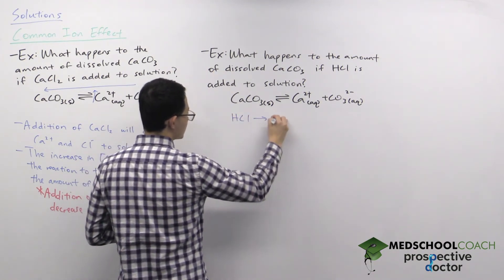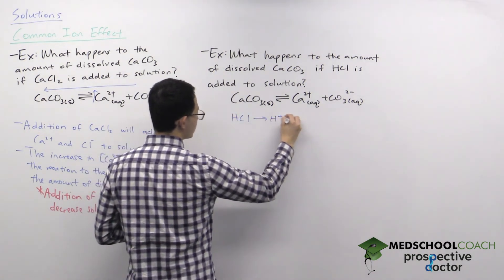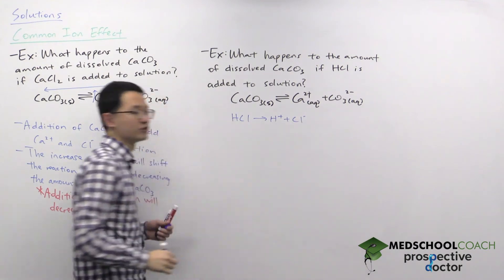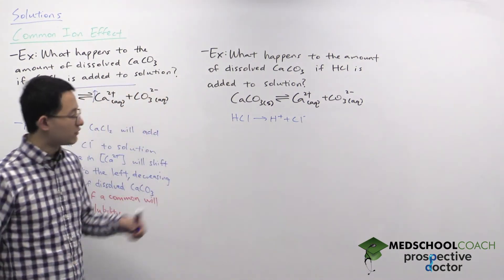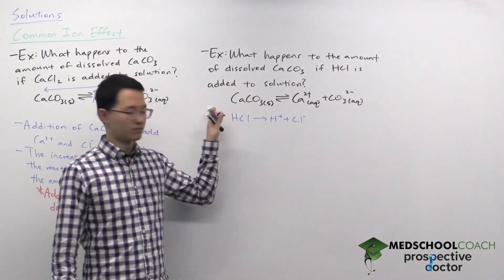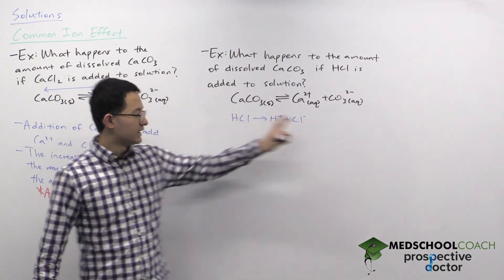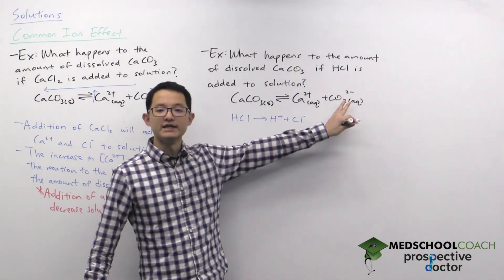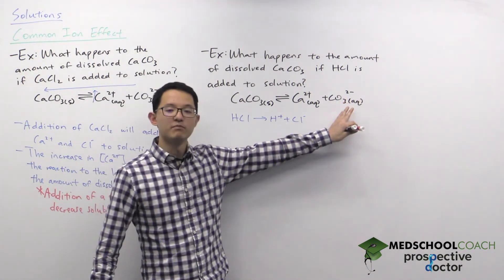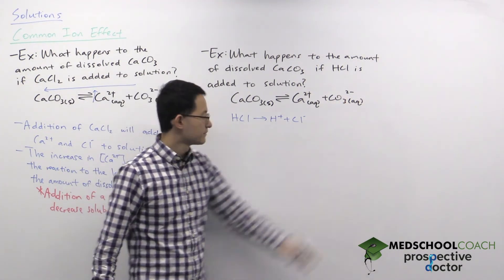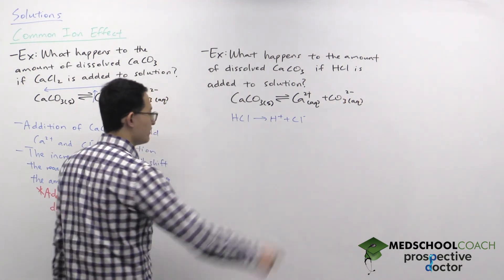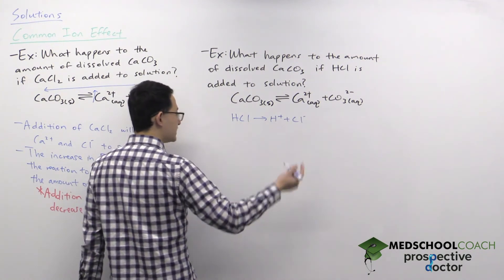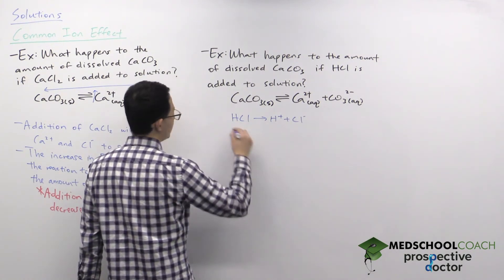What you know is that HCl is a strong acid, so it's going to dissociate to form H⁺ and Cl⁻ in solution. What you should recognize is that carbonate in calcium carbonate is a weak base.